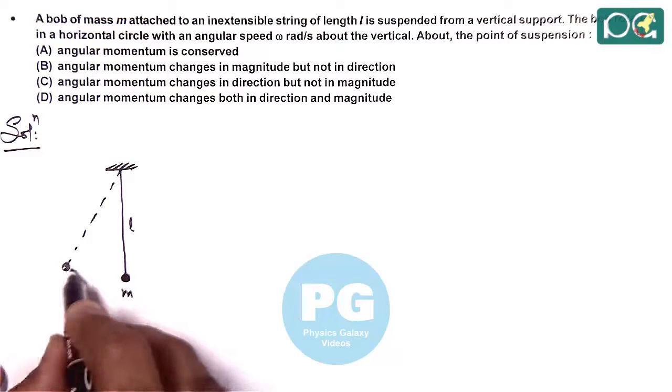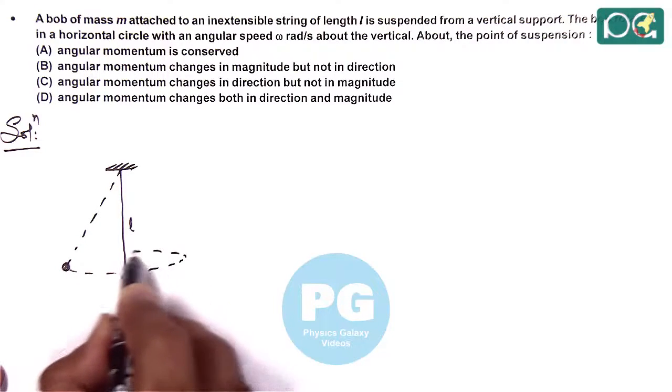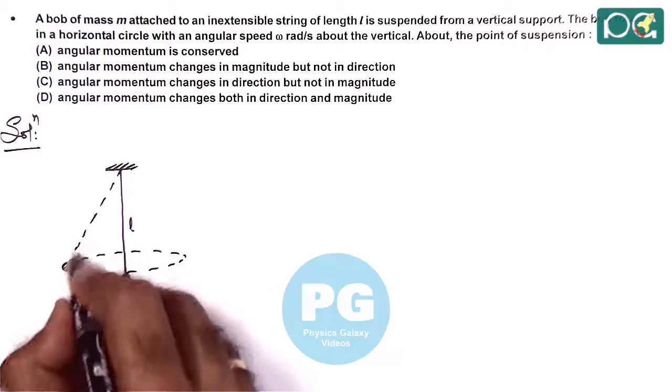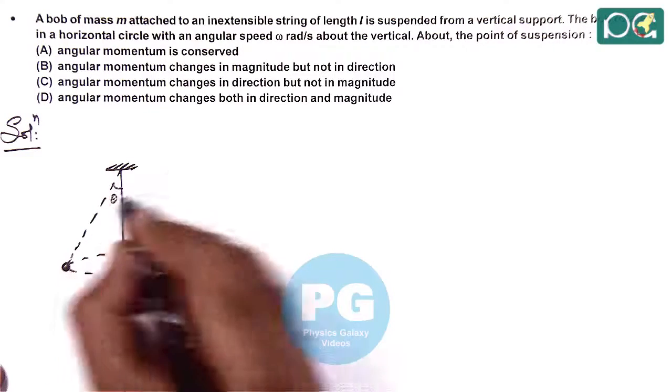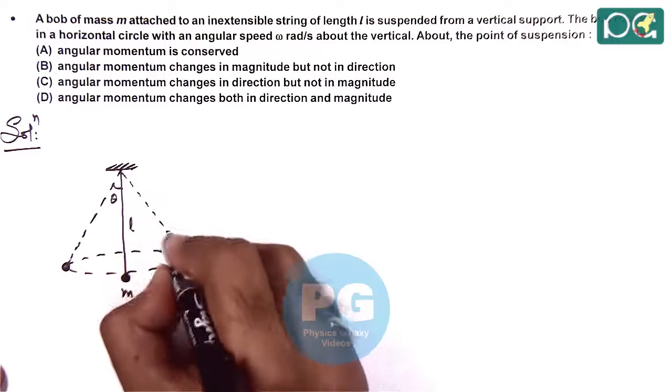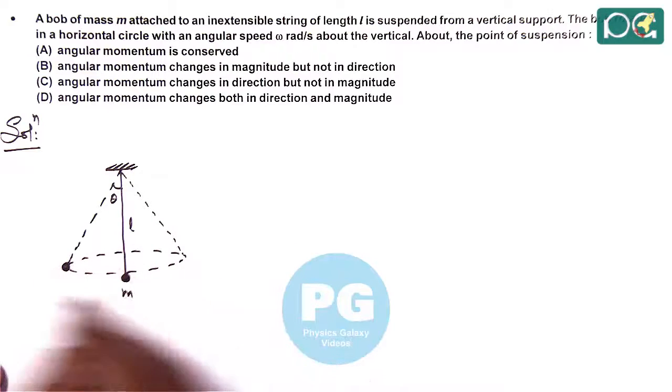It will form a conical pendulum which we already discussed in theory, where we consider the angle is theta. And it circulates in a horizontal circle, say of radius R, and forms a conical pendulum.